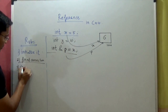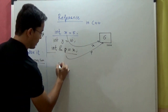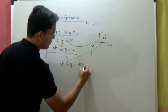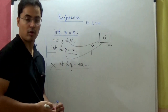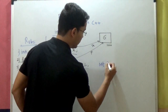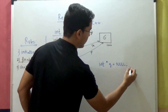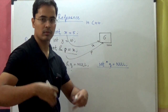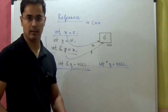The next rule is: you cannot initialize a reference to null. You cannot do something like int ampersand q equal to null — this is not allowed. Unlike pointers, where int star q equal to null is perfectly valid and means the pointer points to nothing. But you cannot create a reference and initialize it with null. Not possible.